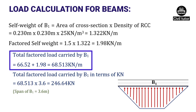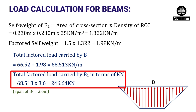The total factored load carried by B1 equals the load due to slab S1 plus factored self weight: 66.52 + 1.98 = 68.513 kN/m. The total factored load in kN equals 68.513 × 3.6 (span of B1) = 246.64 kN.